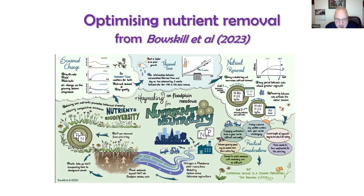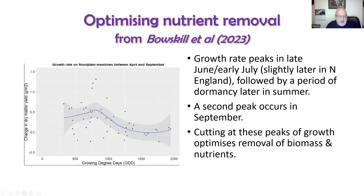It's worth looking up this paper — the lead author Vicky Bowskill does fantastic graphics that make the information much easier to take in. The references are on the final slide, or you can search her name with 'nutrient neutrality' — it's free to access. The chart shows two peaks in growth: one in late June and another in September. Removing grass to coincide with these peaks means you're taking away a lot of the nutrients you don't want.